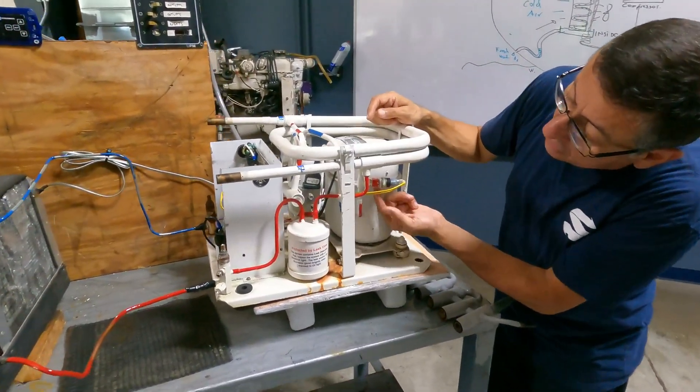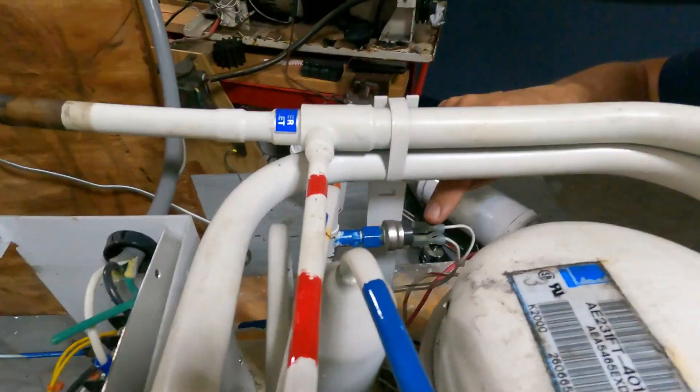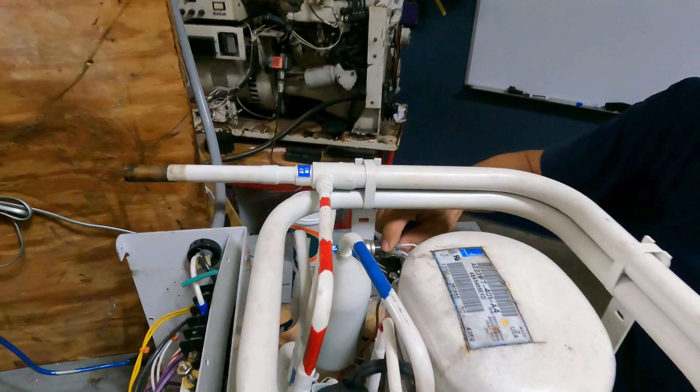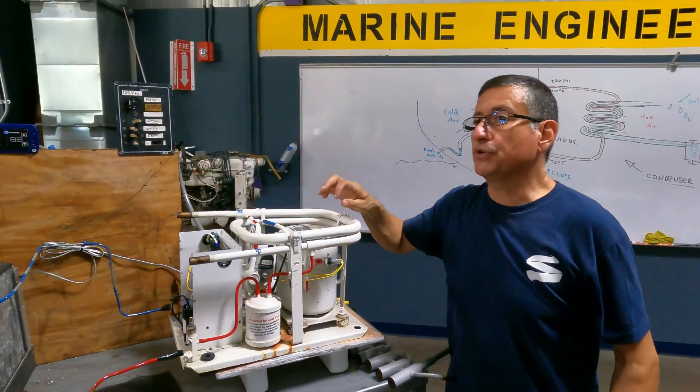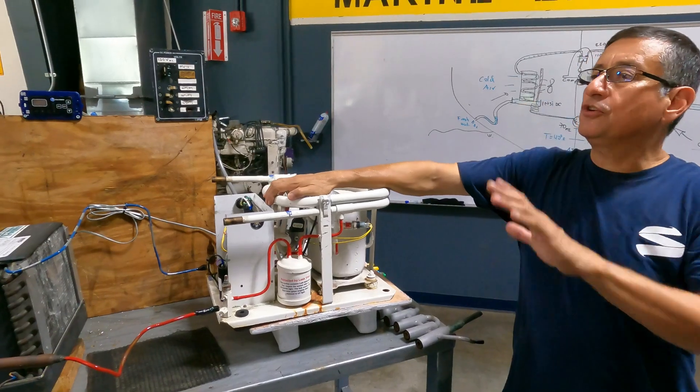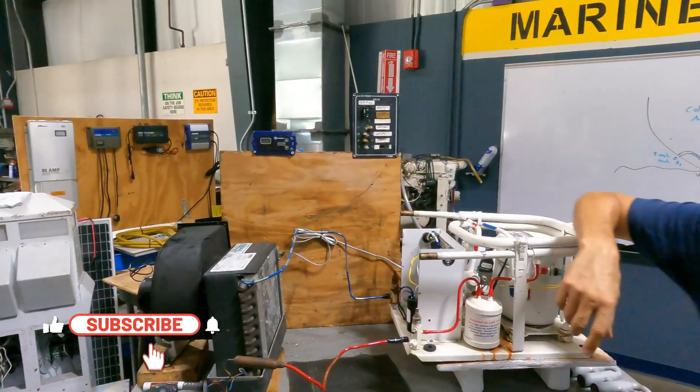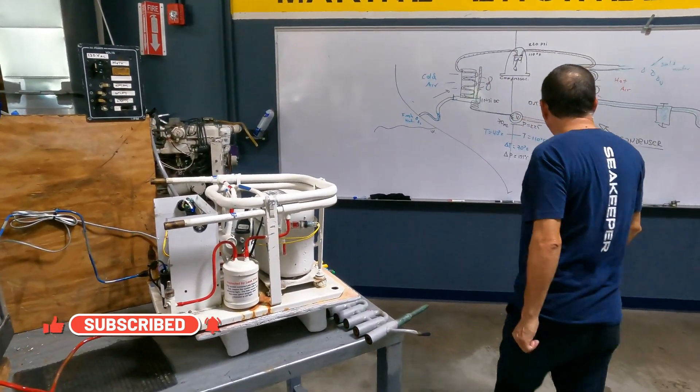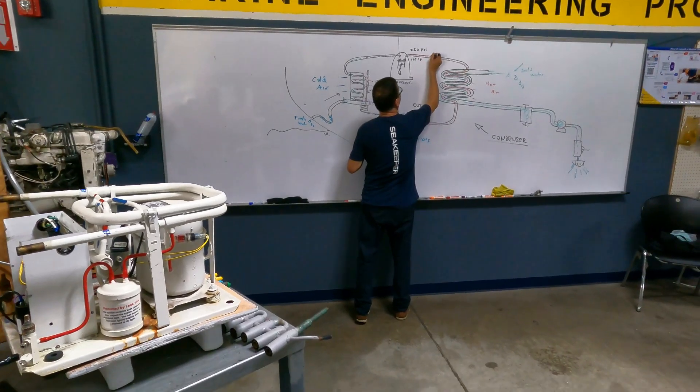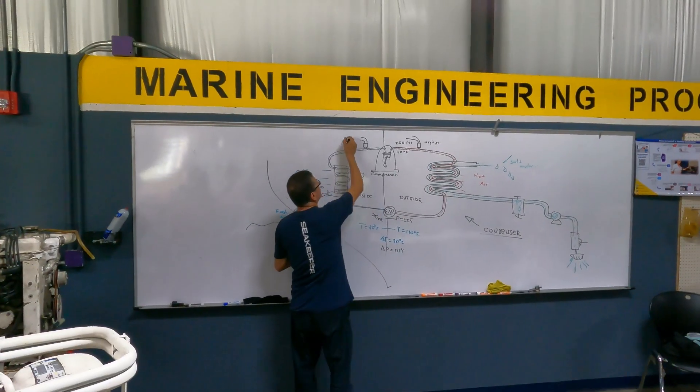I have in the high pressure side one high pressure switch. In the low pressure side, I have another low pressure switch. I have two high and low pressure switches. If my air conditioning unit is running and stopped suddenly, and the alarm said high pressure, give me possibilities. You have here the high pressure switch and here another low pressure switch.